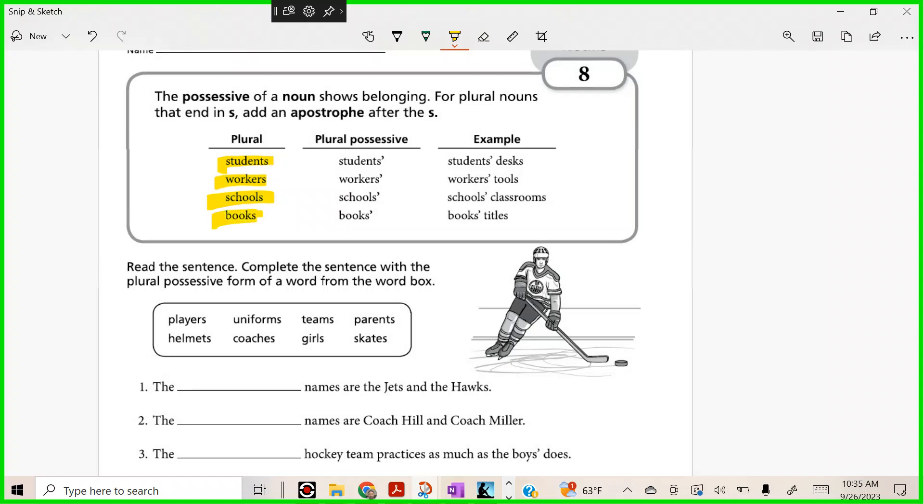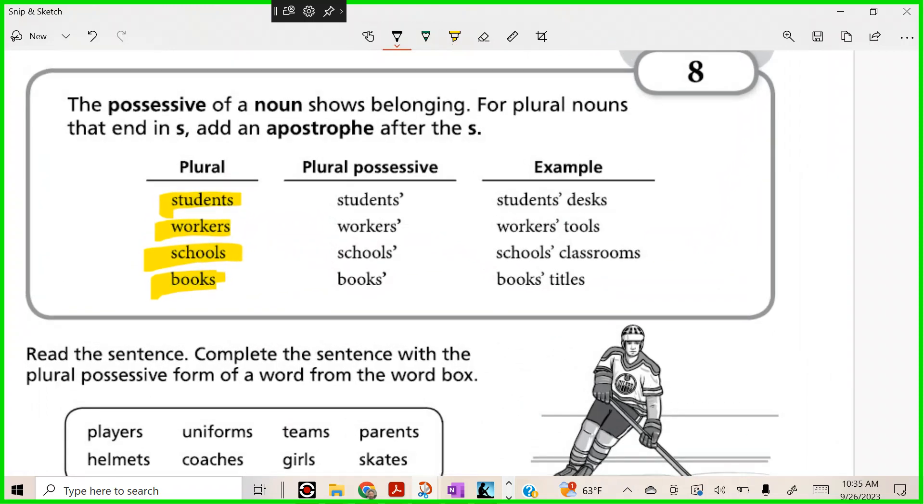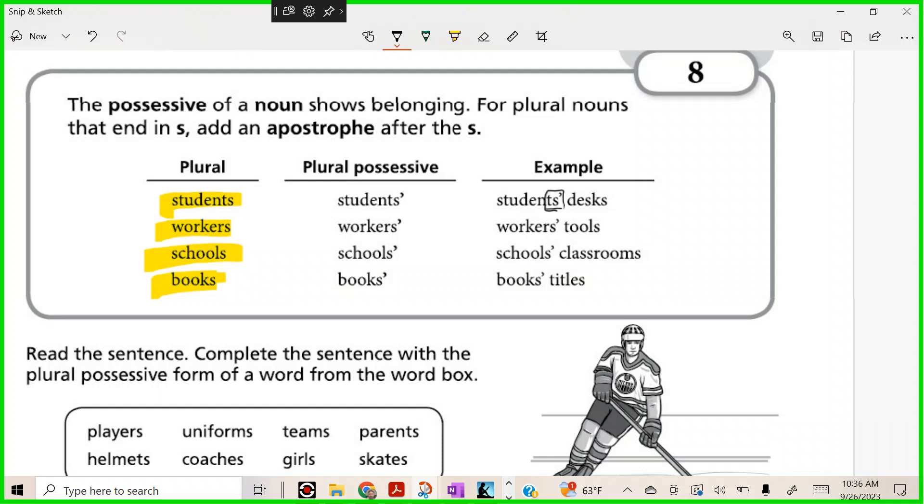Let's zoom right in. The students' desks - what did we do here to show multiple students? S apostrophe, very good. How about the workers' tools? We're not talking about one worker, we're talking about a big group.